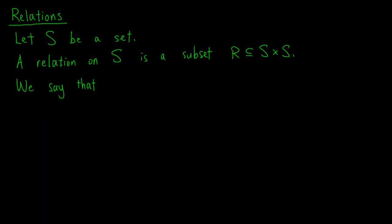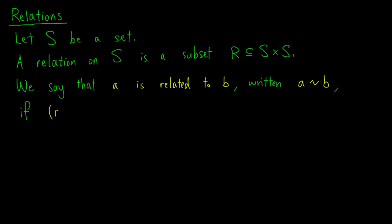Now let's define a relation on a set S. A relation on S is a subset R of the Cartesian product S cross S. We say that a is related to b, written as a tilde b, if the ordered pair (a, b) is an element of R.